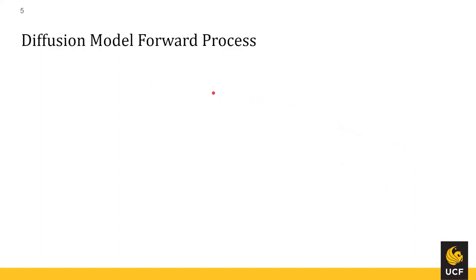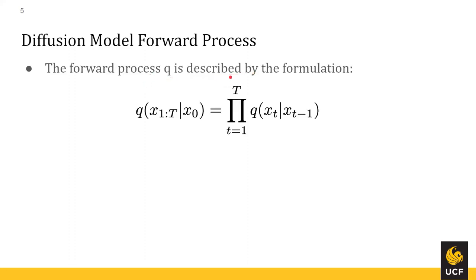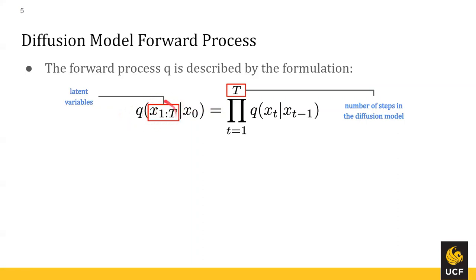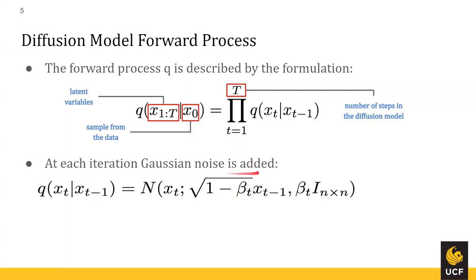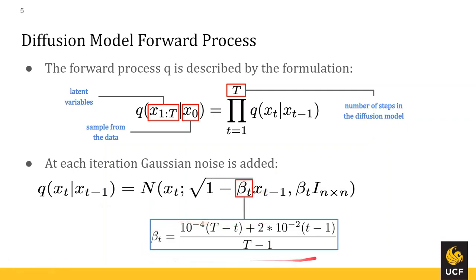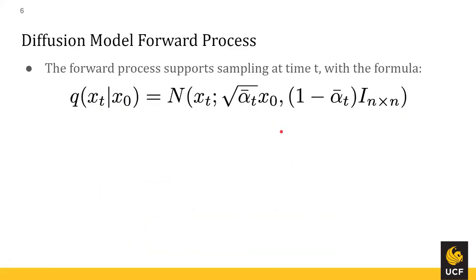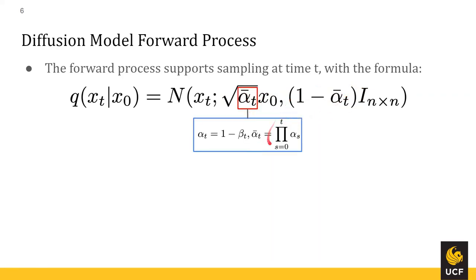Now I'll cover the diffusion model specifics of the paper. We start with the forward process Q, where we're noising an image at each time step. We do this for a total of T steps with these produced latent noise variables X1 to X_T and our input X0. This follows an equation where we have our noise schedule beta, which produces X_T given any X_{T-1}. When sampling a noise sample at time T, given X0 we can get our sample T using a mean and variance, where alpha-bar_T is the product of all previous alpha samples, and alpha is 1 minus beta_T.